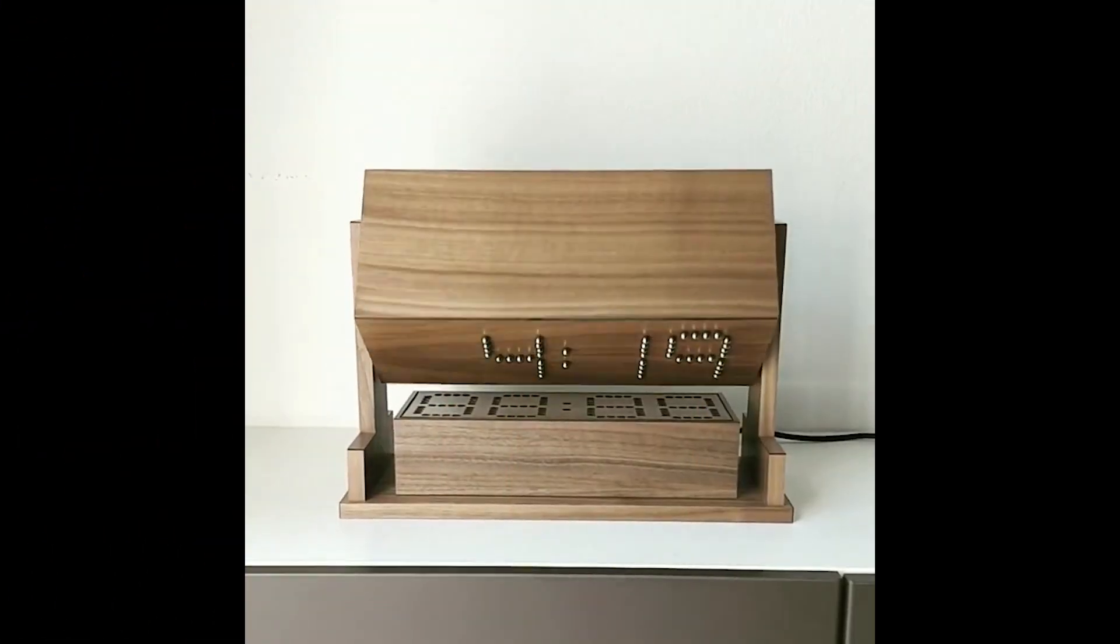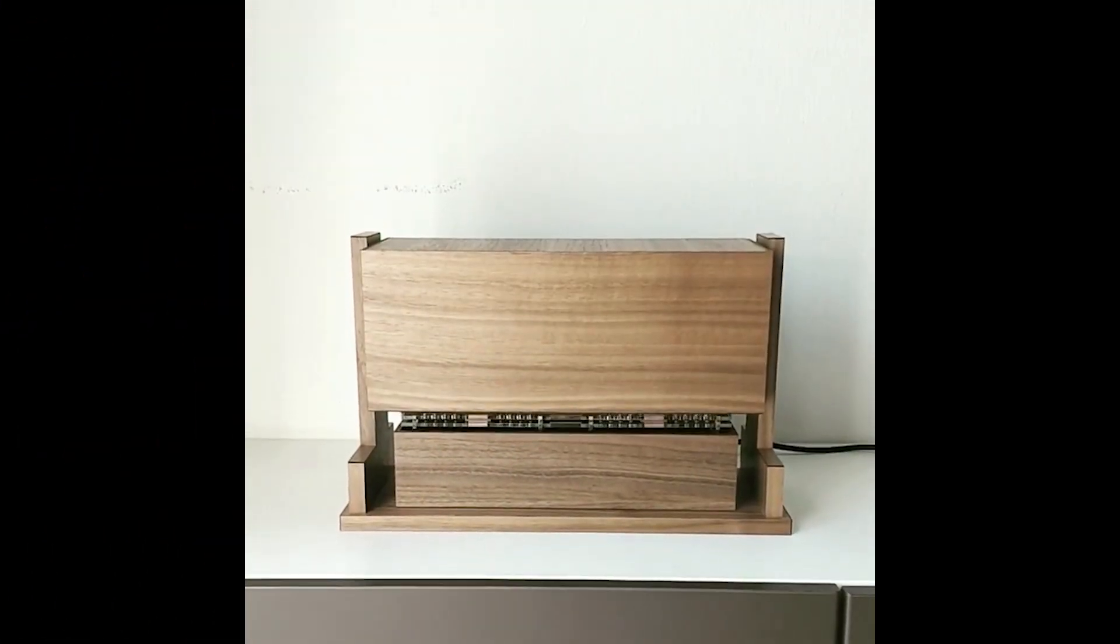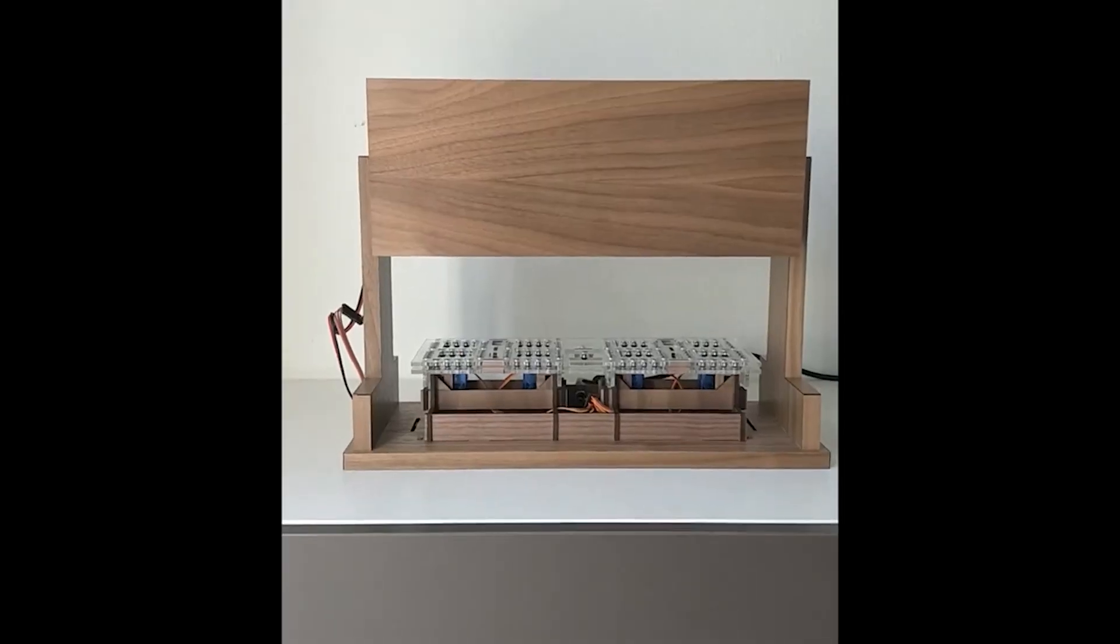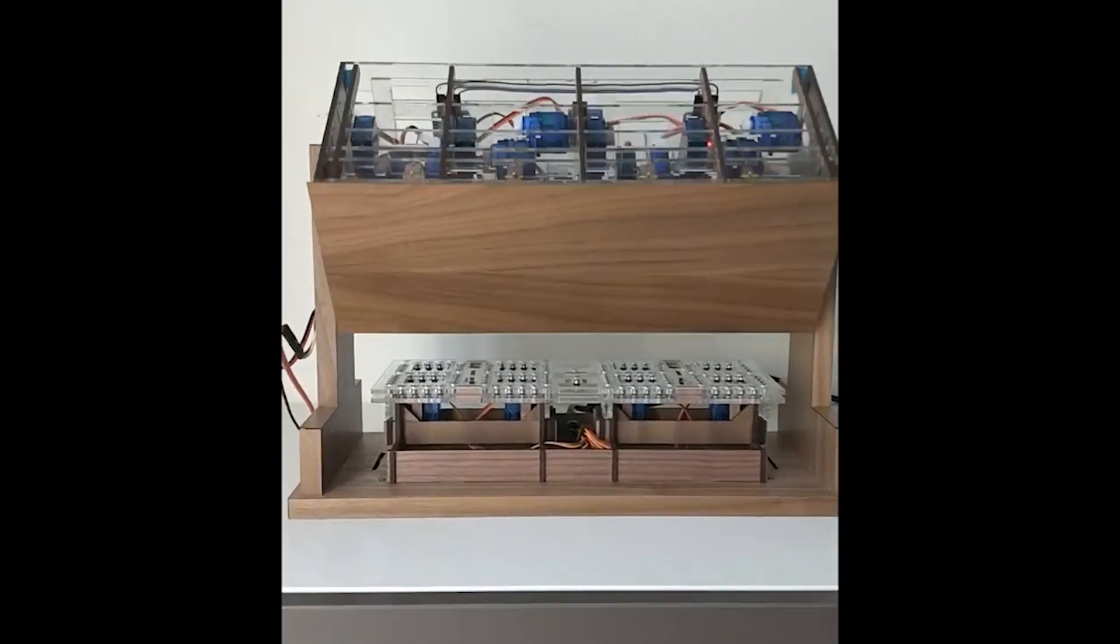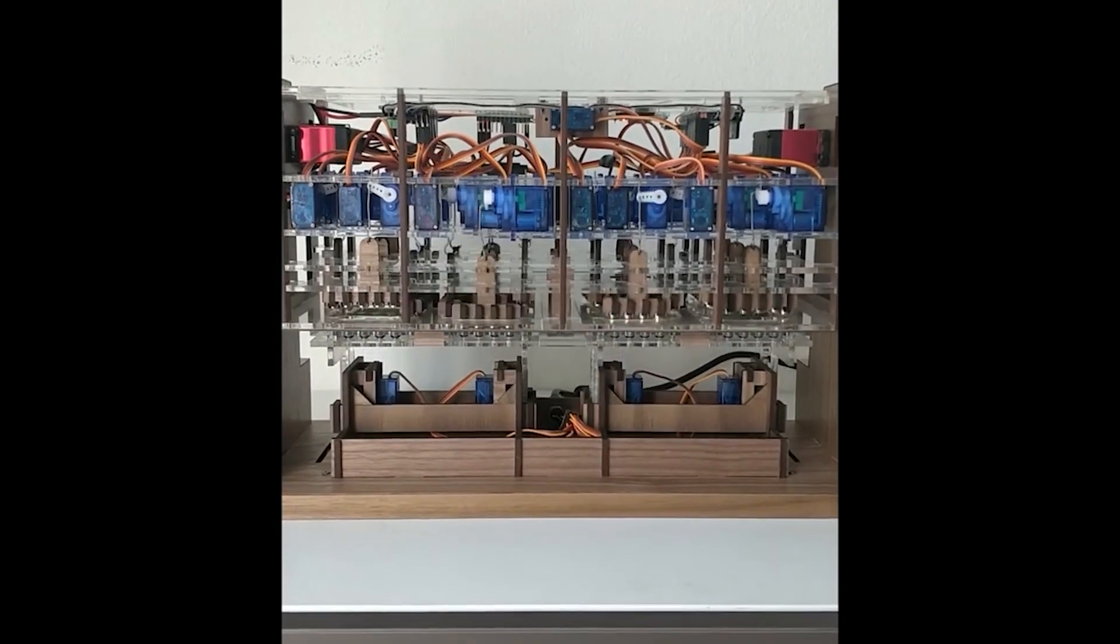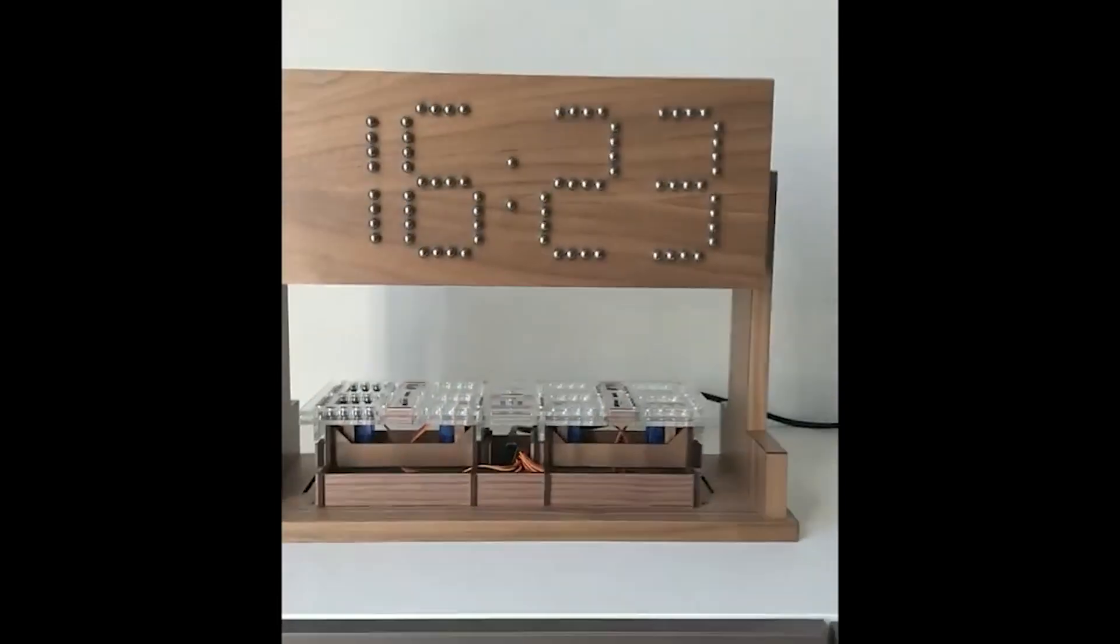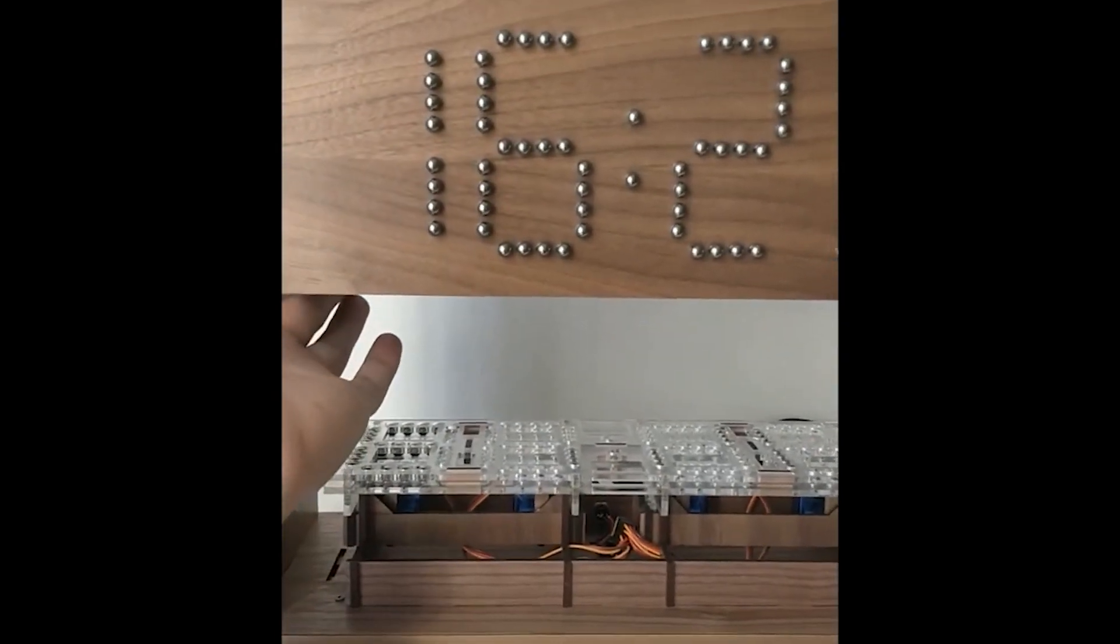Check out this clock from Eric Wynn. It uses a combination of magnets and steel balls to create the numbers. Every minute, a pair of servos holding it up turns the clock face down into this tray where it can exchange the steel balls and update the time. It's very clever. It also makes a very satisfying ker-chunk sound as the magnets engage.